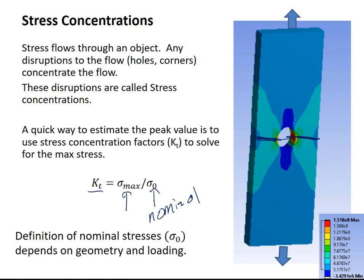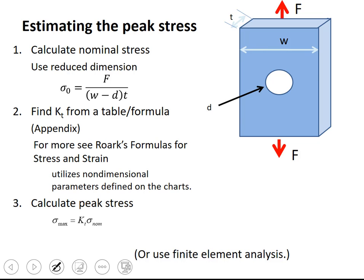So to use this, first step is find the nominal stress. For stress, normally, we're going to use some kind of reduced dimension. So emphasize that that's with a reduced dimension here. And then we will go to a table to find the stress concentration factor. The most common place you're going to look is in the appendix of your textbook, though there are entire books such as works for stress and strain that have a significant number of those. And then you could take that value and you can find the maximum by multiplying the nominal times K sub T to get sigma max.